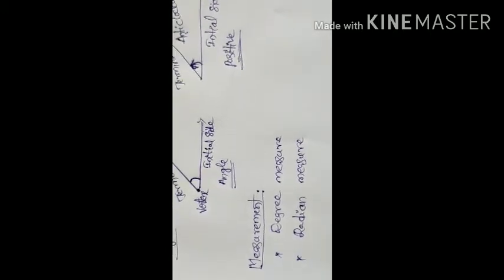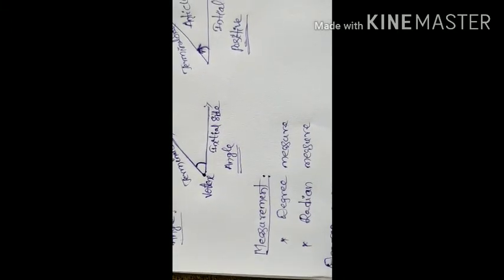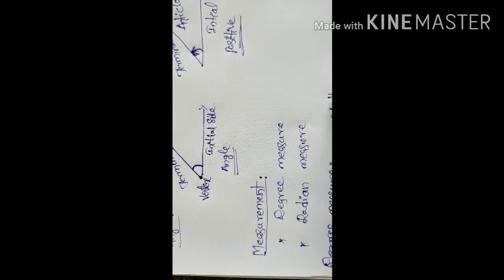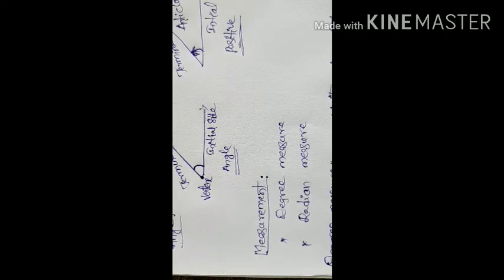Degree measure: an angle is said to be of one degree if it is 1/360th part of one revolution. One revolution means a complete 360 degrees. Generally, degrees are represented as whole numbers like 30 degrees, 40 degrees, 50 or 15 degrees. Sometimes we can also express measures in decimals.